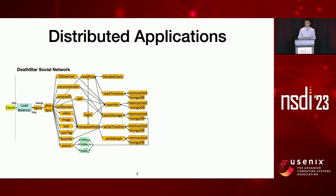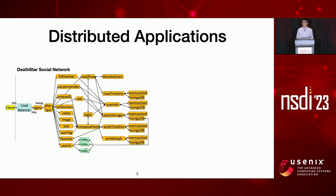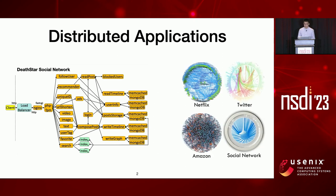Distributed applications running in cloud and data centers are becoming increasingly complex. One example is the microservice, an architectural approach to build internet-scale applications. The idea is to break down the monolithic system into small components that run on many machines and storage nodes. Such a design can make system building simpler because we mostly focus on developing single services and can simply test them and put them together as a whole large-scale system.